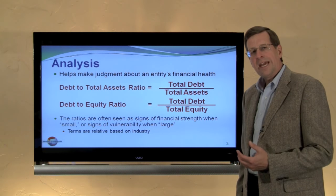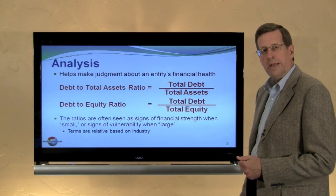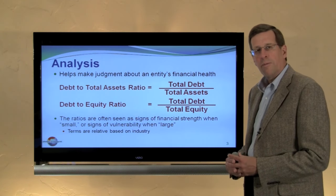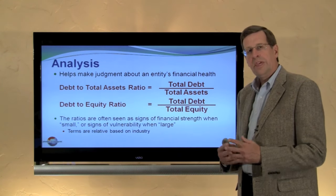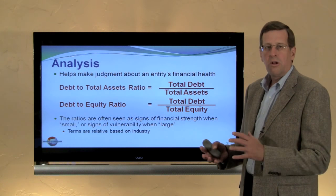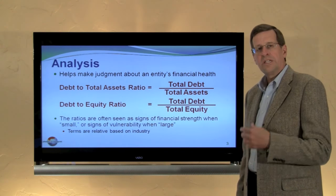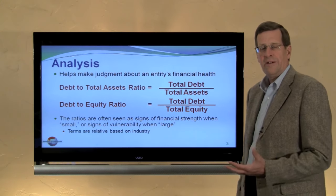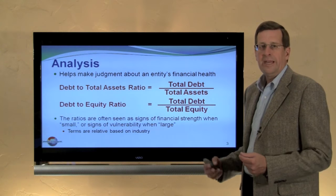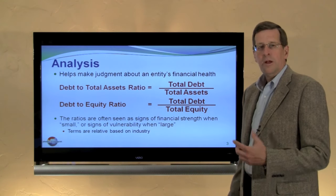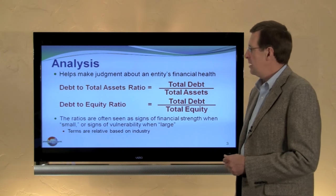Both of these ratios indicate the degree to which a company is financed or leveraged. Leverage can be a positive or negative thing depending on operating performance and what's available for common shareholders. You can't draw general conclusions about whether small or large values are good or bad — one has to look at this on an industry basis. For example, financial services firms may have 90% debt financing, while a manufacturing company might see 50-50 as more appropriate.